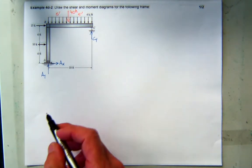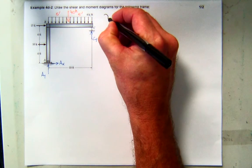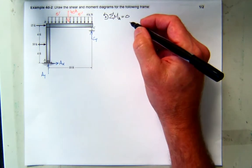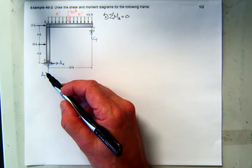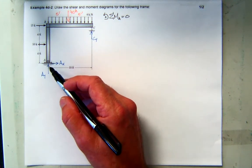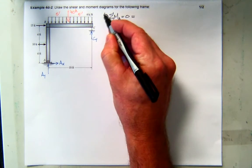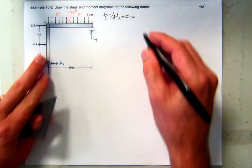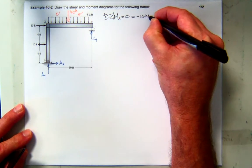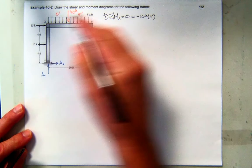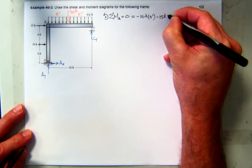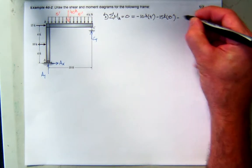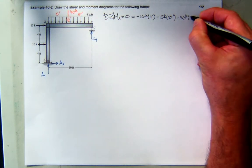Now I can check the equilibrium of this whole structure. The easiest thing to do first would be to sum the moments at A — that's our pin. The reason we do that is there are two unknowns at the pin, so they're concurrent there and won't create any moment, leaving only one unknown: CY. With the right-hand rule as my sign convention, all these forces create negative moment about A. The first is ten kips with a moment arm of four feet, the next is fifteen kips with a moment arm of eight feet, and then the forty-kip concentrated equivalent force with a moment arm of five feet.